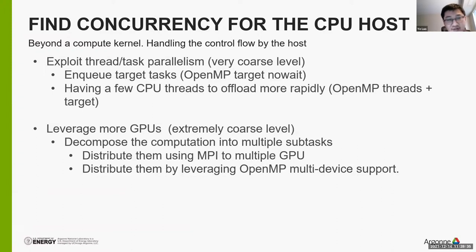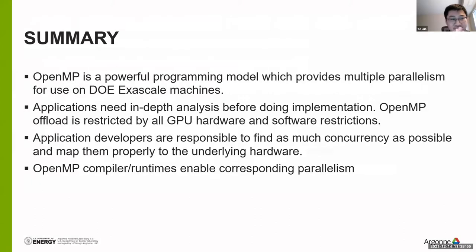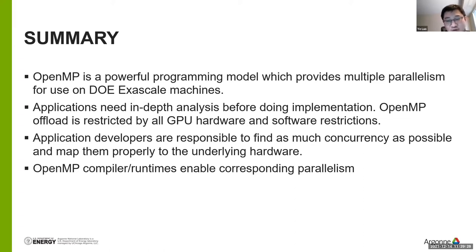Based on that analysis, you have to think about how to make the kernel bigger, and leave anti-GPU portions to the CPU — taking advantage of OpenMP tasking and threading. OpenMP also offers multi-GPU support if needed. OpenMP is a powerful programming model offered on all GPU exascale machines, but for application porting you need to do in-depth analysis before taking action. Think about all the restrictions from GPU hardware and software. As application developers, we are responsible for finding more concurrency and mapping it properly to the underlying hardware. OpenMP is only a tool — once the design is right, it enables the performance.